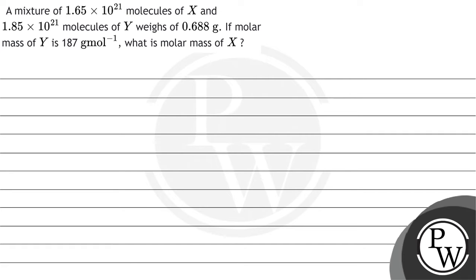Hello, let's see the question. A mixture of 1.65×10²¹ molecules of X and 1.85×10²¹ molecules of Y weighs 0.688 gram. If the molar mass of Y is 187 gram per mole, what is the molar mass of X? The key concept here is moles and molar mass.